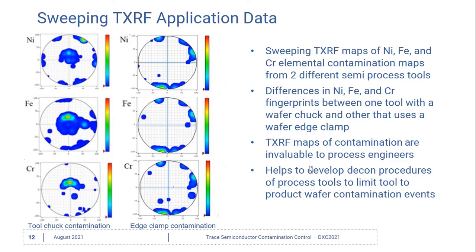Here are two examples of sweeping TXRF application data from two separate wafers, both showing nickel, iron, and chromium contamination. On this first wafer, from the first processing tool, most of the contamination for nickel, iron, and chromium came from the center of the wafer. This was determined to be coming from the tool chuck.